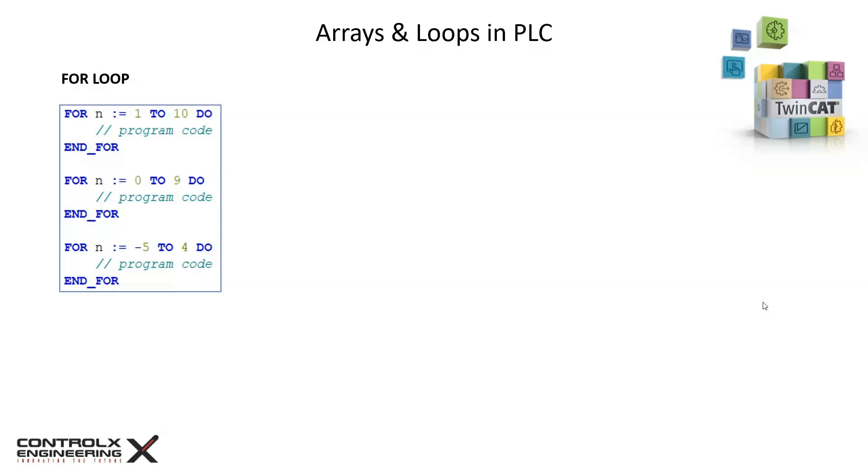The for loop is one of the most common loops used in PLC programming. It is used to execute instructions a specific number of times. The for loop has a specific start and end points as shown in these examples.